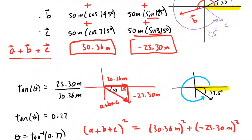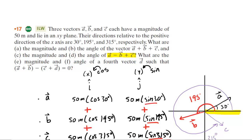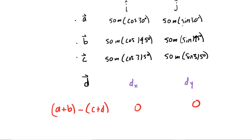Finally, we go to parts E and F — and it gets a little crazy here. They want A plus B minus C plus D to equal zero. So let's put a new table to solve this part of the question. This time, we've included a fourth vector D whose x and y coordinates are unknown, denoted as D sub x and D sub y. The condition A plus B minus C plus D equals zero means both the x and y components must equal zero.